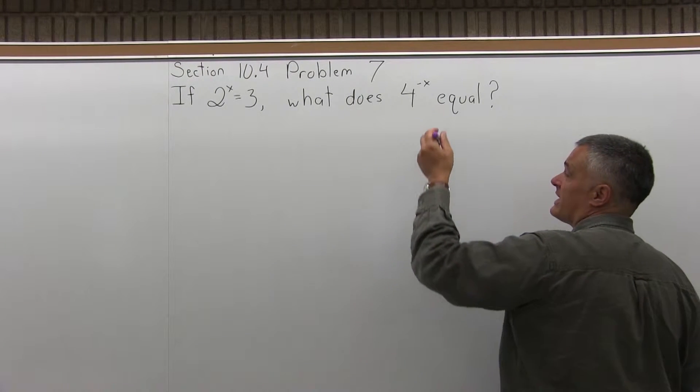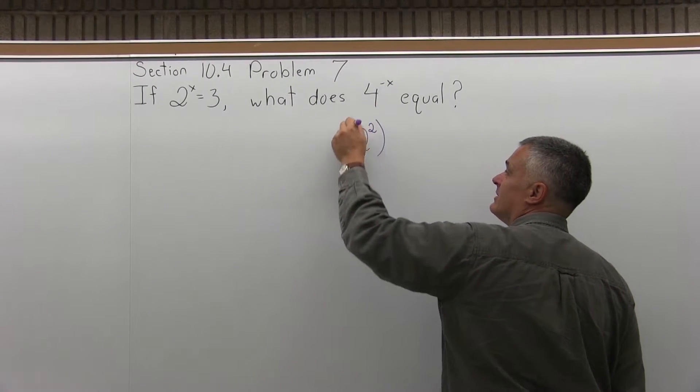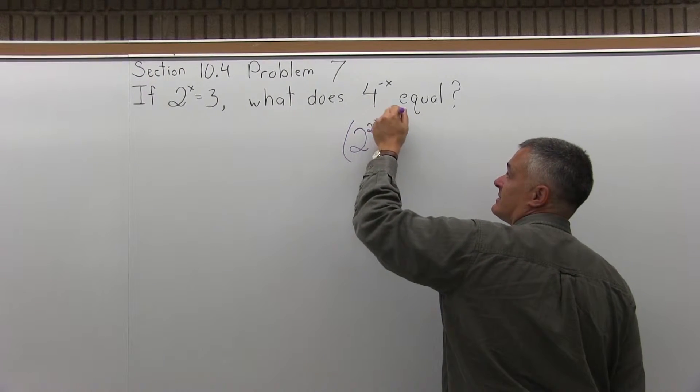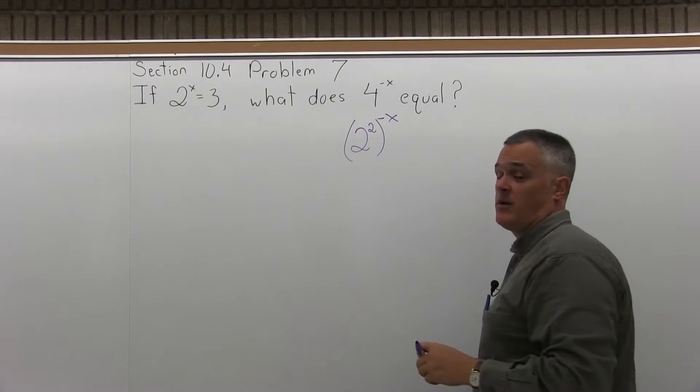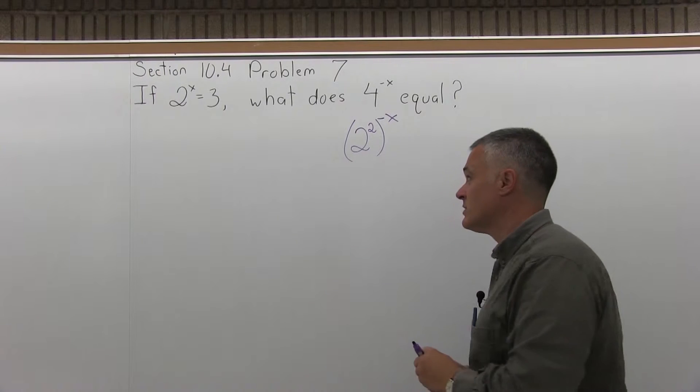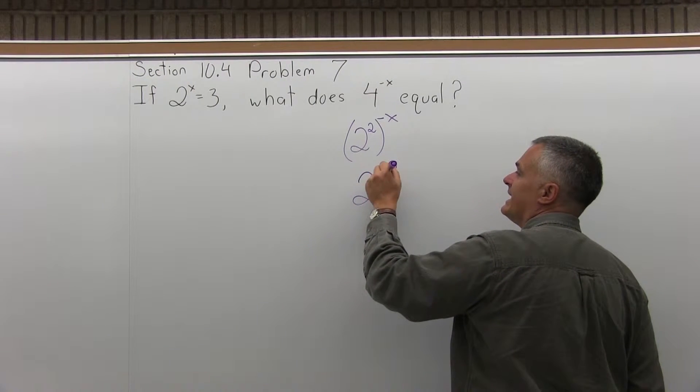4 to the negative x, my first thought is, it's really 2 to the second to the negative x. 2 to the second is 4. And now I have a power raised to a power. I multiply those powers. One of my rules of exponents is that's what you do. So it's 2 to the negative 2x.